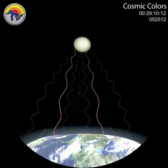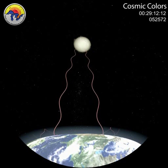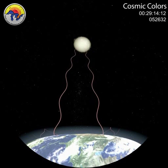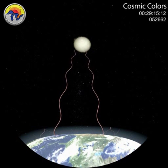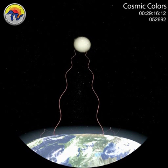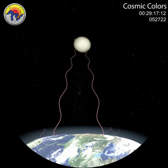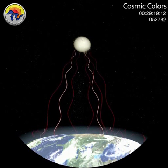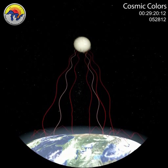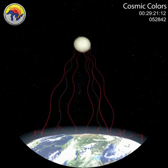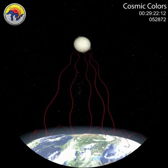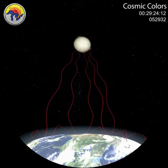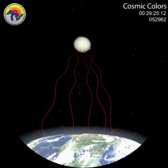Some infrared light reaches Earth and gets trapped by greenhouse gases in our atmosphere. A broad range of radio waves can slip through our atmosphere and reach the Earth's surface.